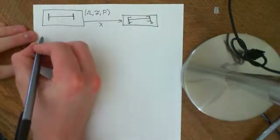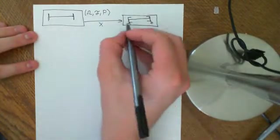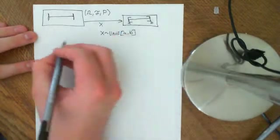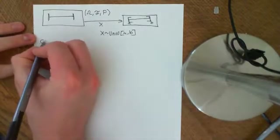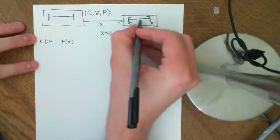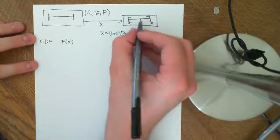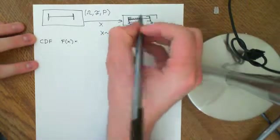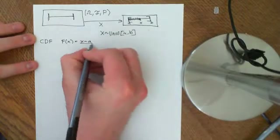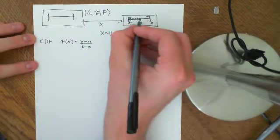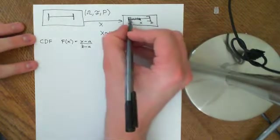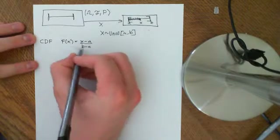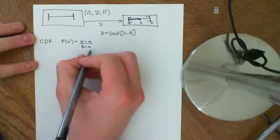If we want to examine the properties of this probability distribution — X is uniformly distributed on the interval [A, B] — let's first work out the CDF. Big F(x), the probability that X is less than or equal to some point x, is equal to how big the interval from A to x is relative to the whole interval. The length from A to x is x minus A, and the length of the entire interval is B minus A. So the CDF is (x − A) / (B − A).